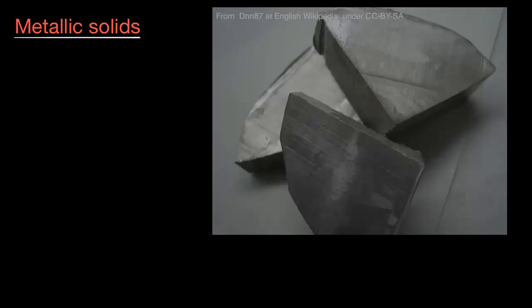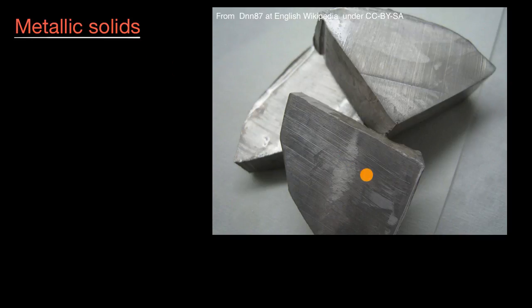Let's talk a little bit about metallic solids. And here is an example of what a metallic solid might look like. They tend to be shiny like this, some would say lustrous.